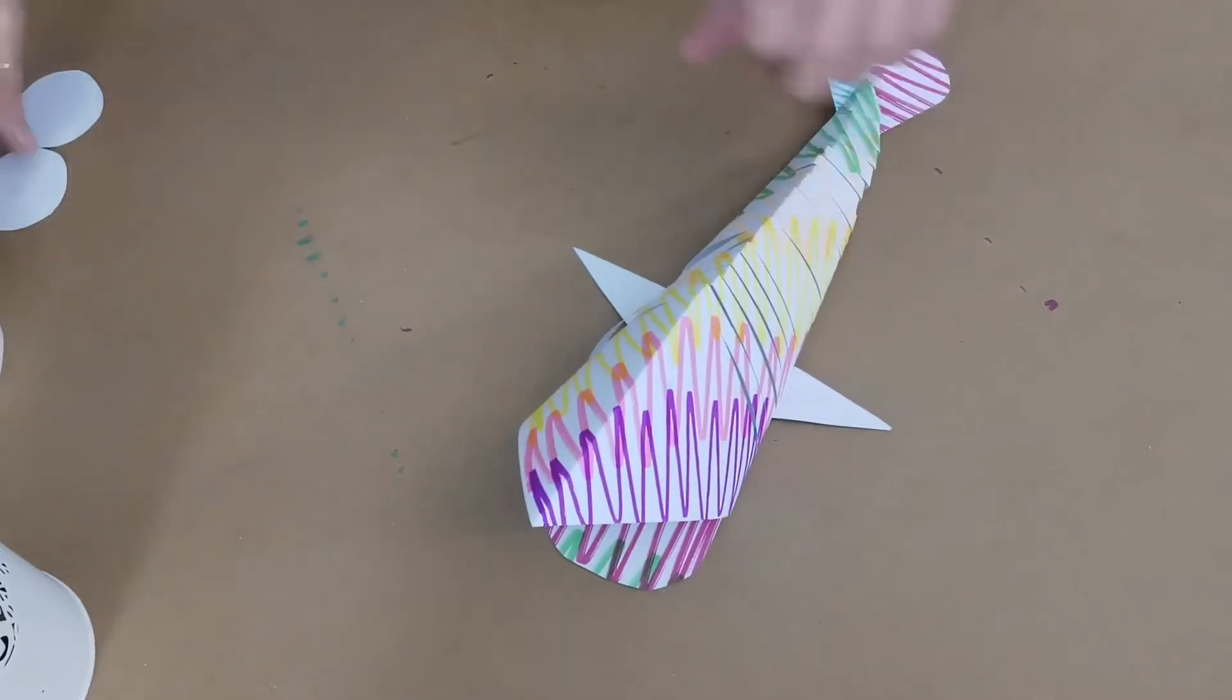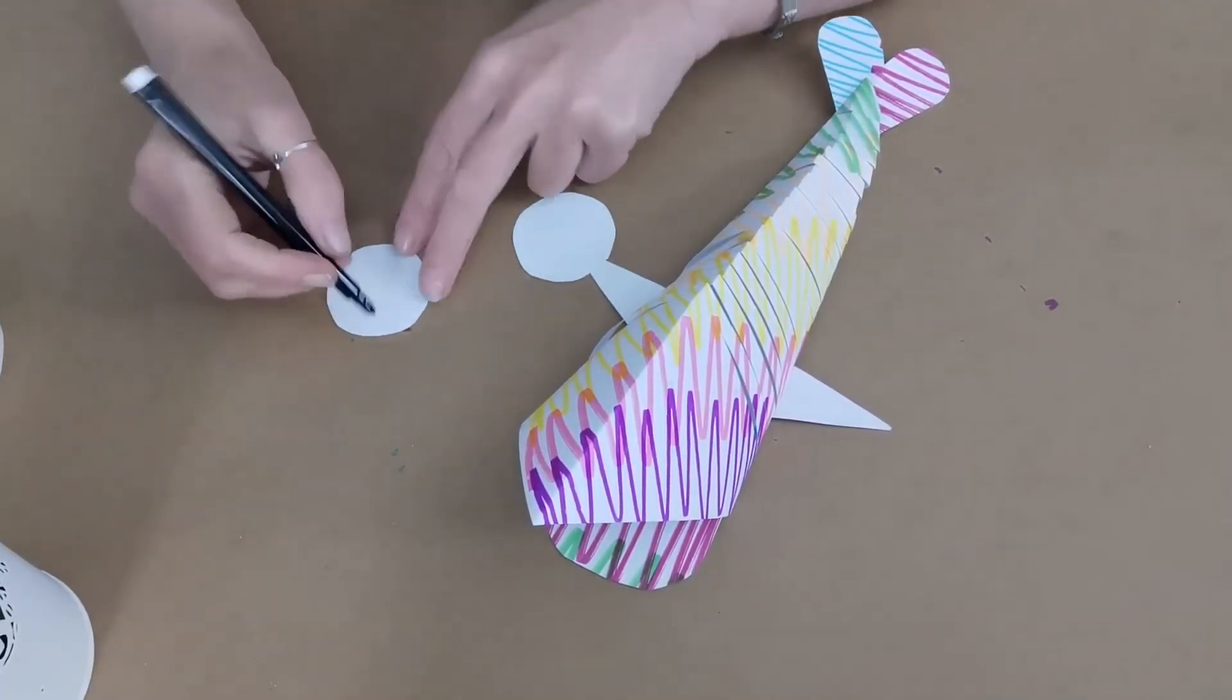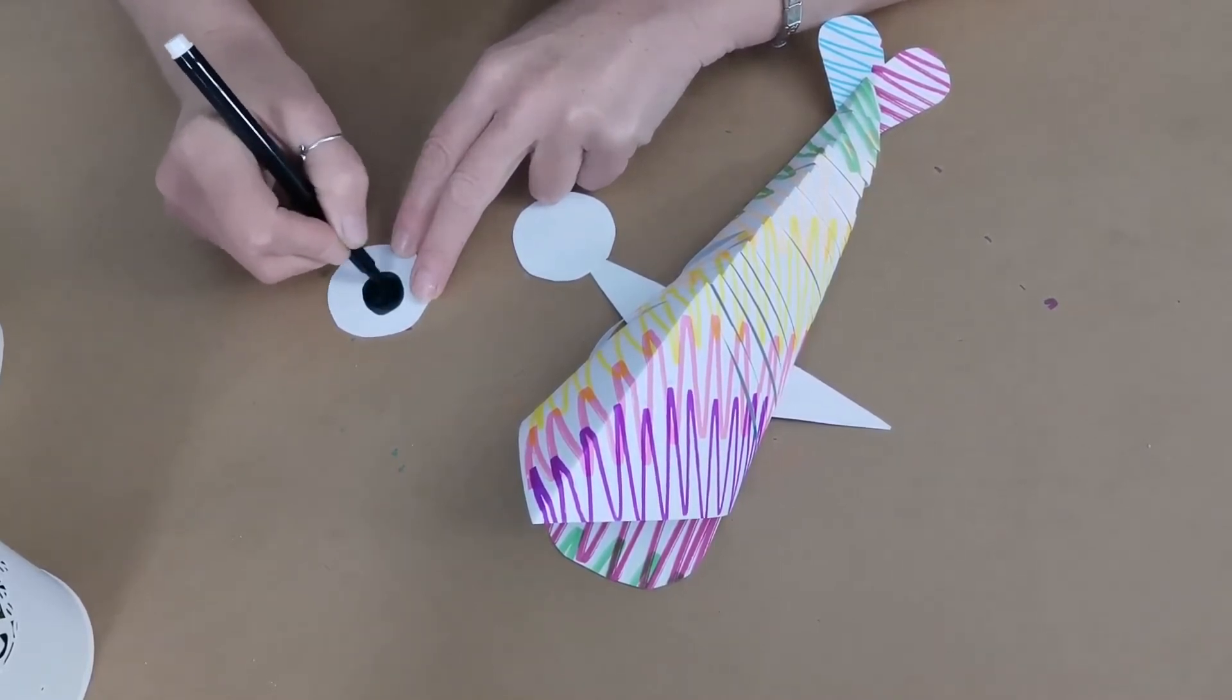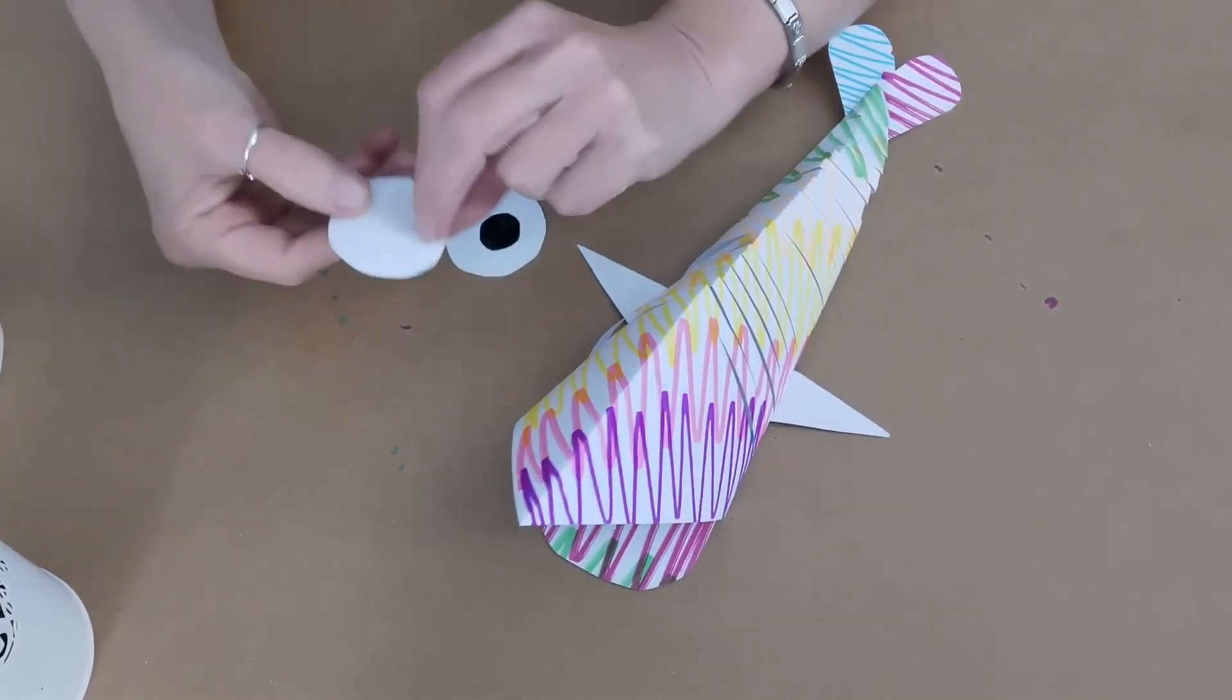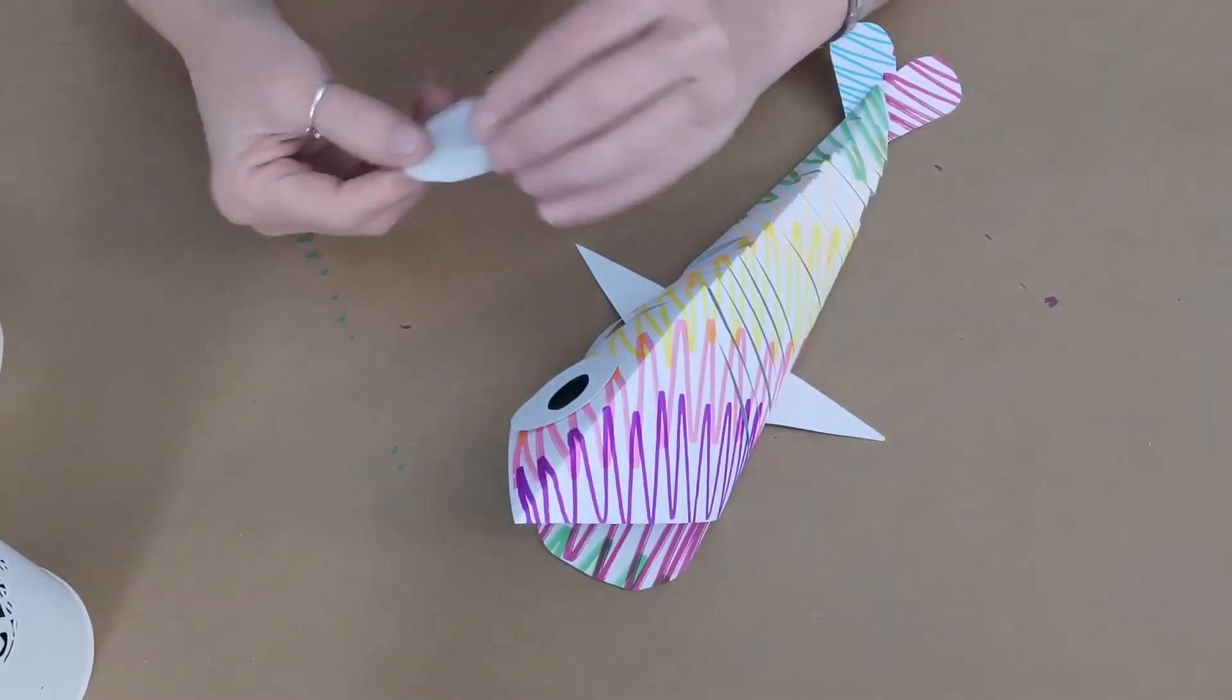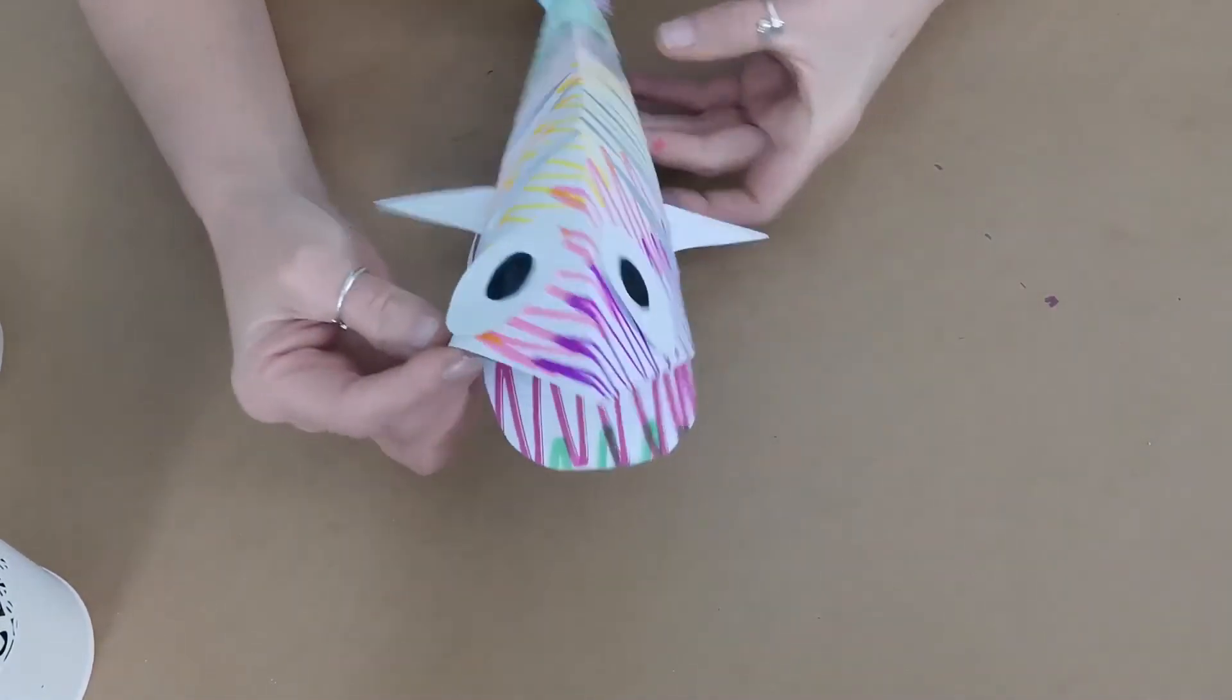So the last wee bit I want to add on are some eyes. So I have cut these pieces of circles out of white card. I'm just going to get my black pen and put a big black circle into the middle of these. And the same over this side. Just like that. I already have some tape on here. So I will put one on this side of the head and one on this side of the head. To get them two groovy eyes.